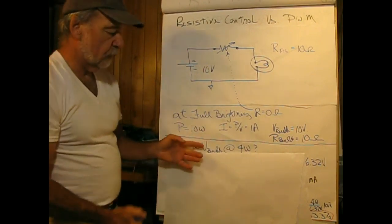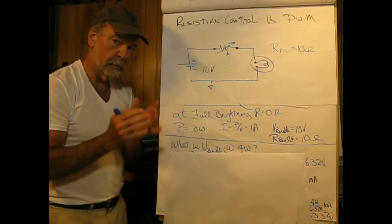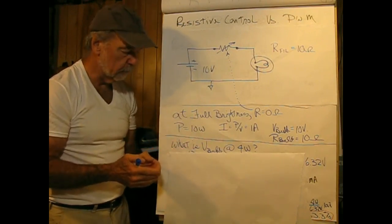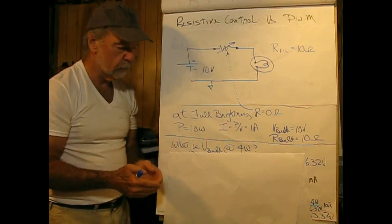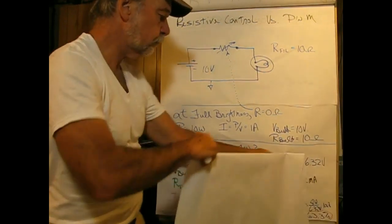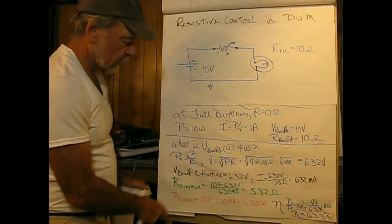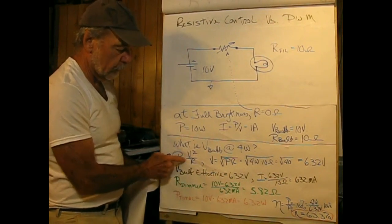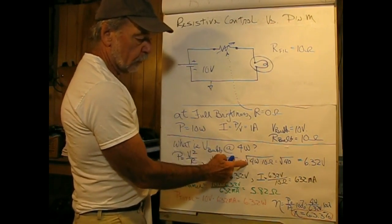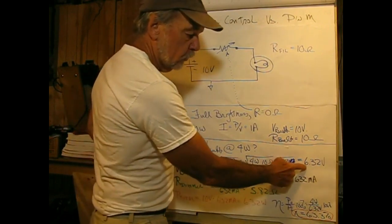Now, what is V_bulb at 4 watts? What's going to be the voltage across this bulb at 4 watts? I'd like you to pick a number for this voltage — it's got to be between 0 and 10 of course. We're going to start by saying P equals V squared over R, and if we solve for V, we see it's the square root of P times R, which equals the square root of 4 watts times 10 ohms, equals 6.32 volts.